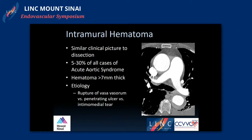Intramural hematoma presents clinically similar to aortic dissection — chest and back pain in the majority of cases — and comprises five to thirty percent of all acute aortic syndromes. The radiologic definition is hematoma within the wall when there is seven millimeters of thickness. These patients are a different subset: dissection patients don't often have atherosclerosis, whereas patients who present with penetrating ulcers and intramural hematomas are typical atherosclerotic patients with the same kind of risk factors.